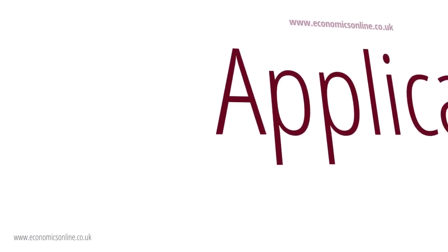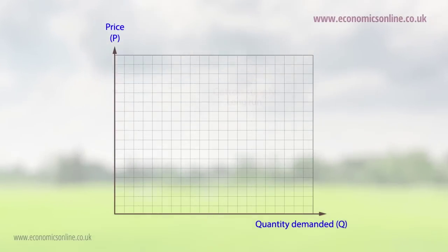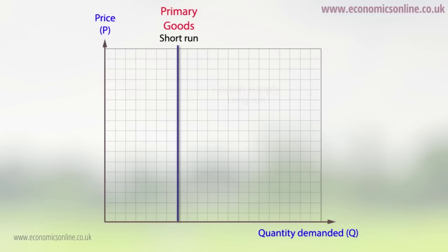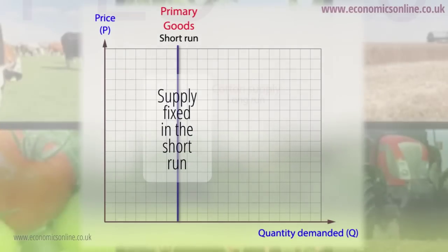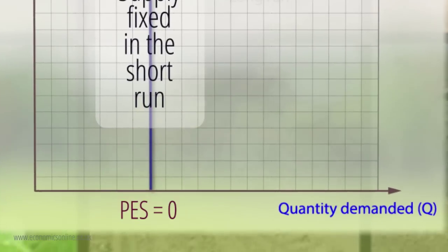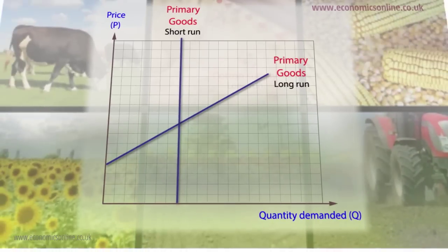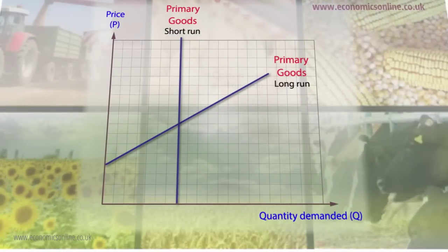Price elasticity of supply is a significant concept in economics and has several applications. In the case of agriculture, the short- and long-run elasticities of supply are very different, which creates the tendency for prices to become unstable. Typically, in the short-run, the quantity of most agricultural and other primary commodities cannot be altered until the next growing season, so the short-run supply curve is vertical and PES equals zero. However, in the long-run, it is possible to respond to the market by planting more or fewer crops, which enhances the producer's ability to supply.